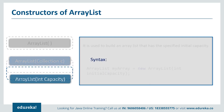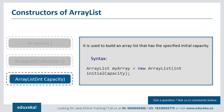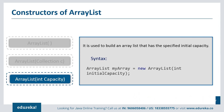The next constructor is ArrayList(int capacity). This is used to build an ArrayList that has a specified initial capacity, where initial capacity is the number of cells the ArrayList starts with. It can expand beyond this capacity if you add more elements. Now let's see a small example to understand how and where these constructors are used.